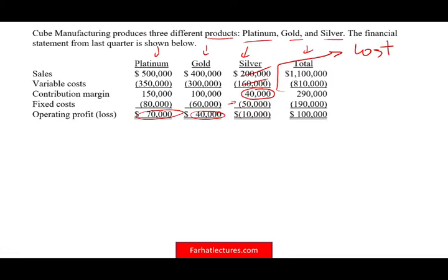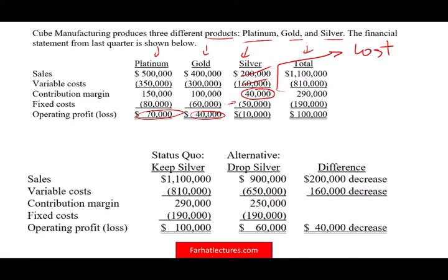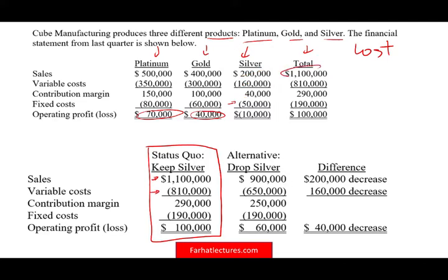Let's assume we cannot get rid of the fixed cost — it will have to be reallocated. Looking at our current situation: total sales are $1.1 million, total variable cost is $810,000, contribution margin is $290,000, and fixed cost is $190,000. Therefore, overall, the company is making $100,000.